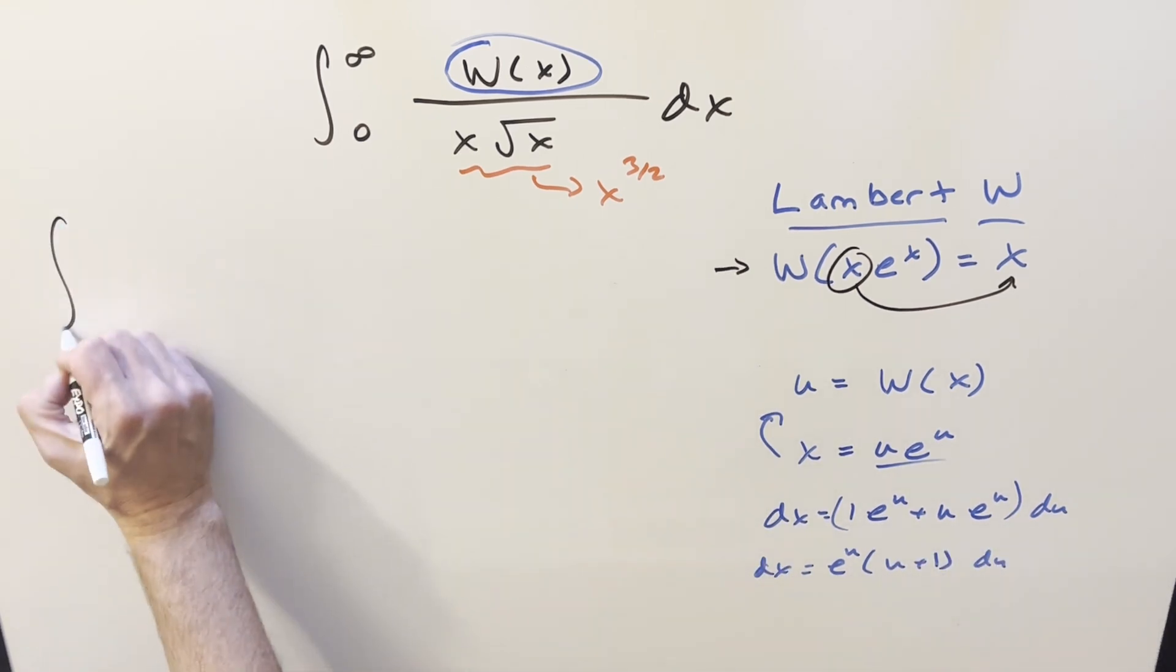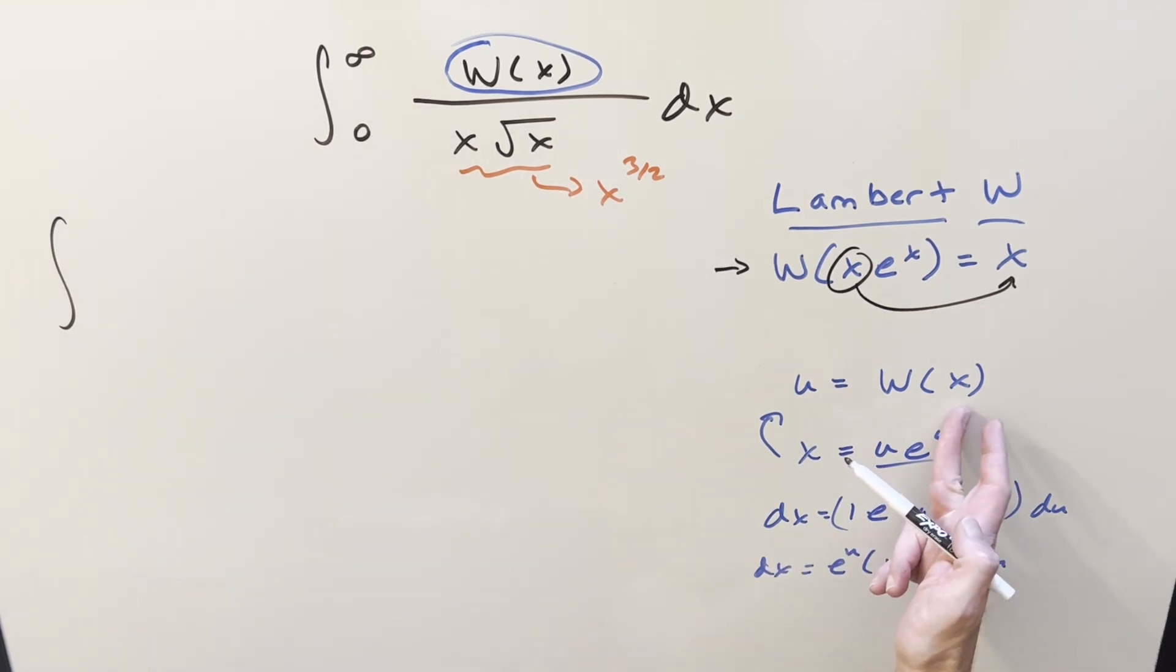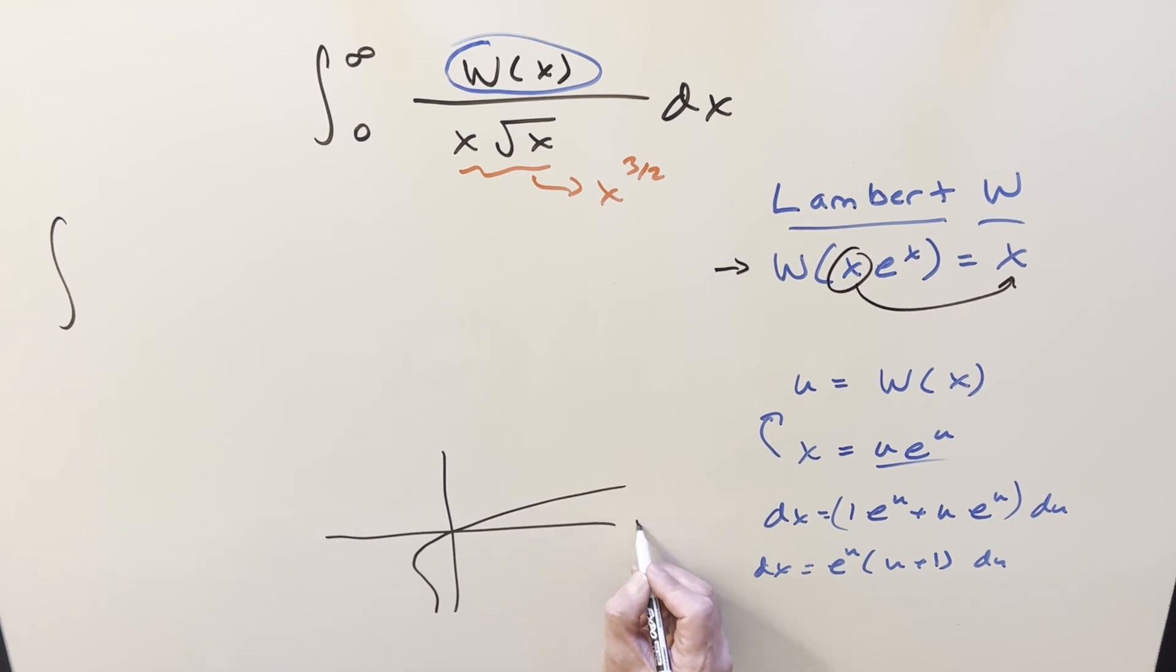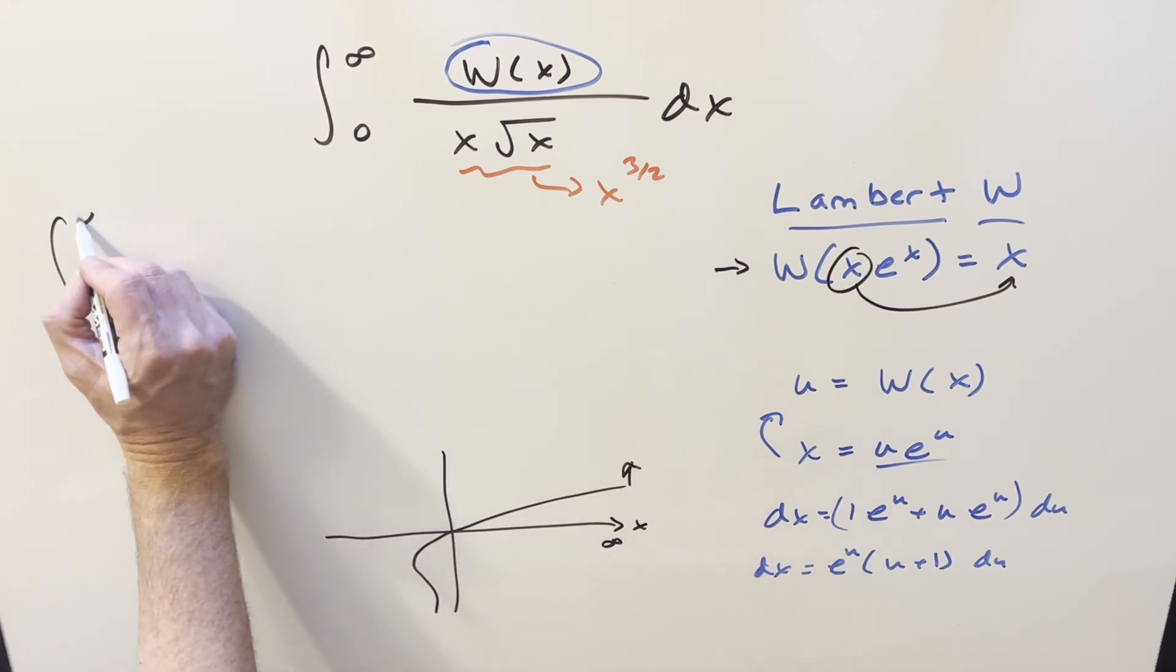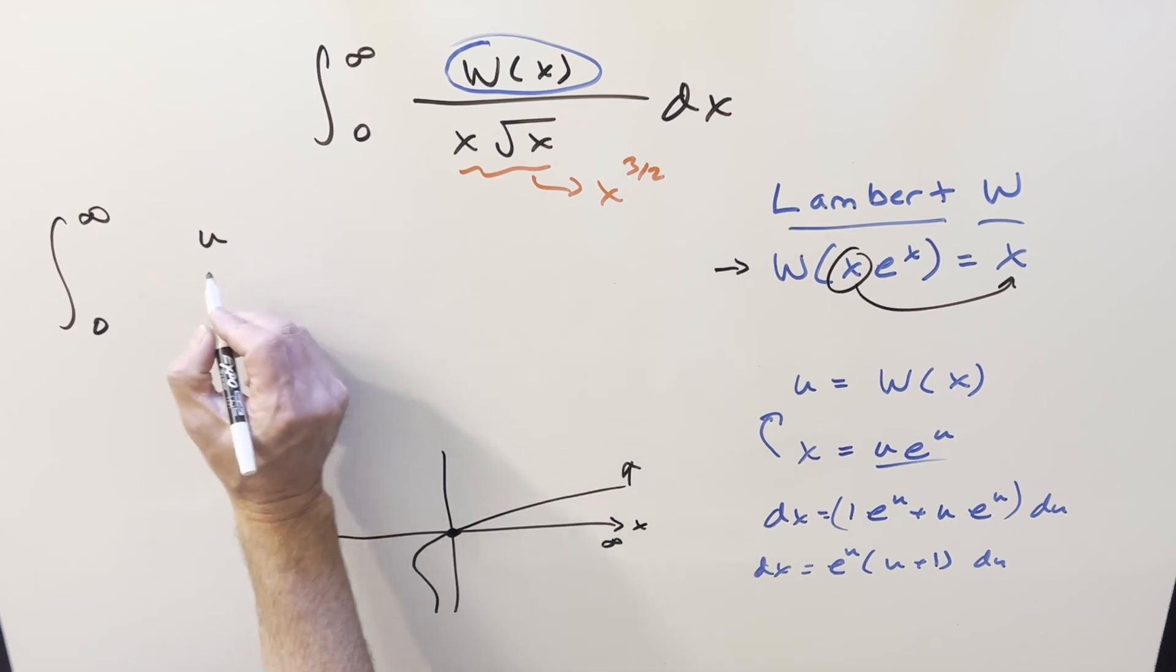Now we'll come over here and we'll just go ahead and substitute. First, plugging in infinity into the Lambert W function. Just a very rough graph of the Lambert function, it's something like this. So as the x value, as this is going to infinity, this is very slowly also going to infinity. So our upper bound is going to infinity. You plug a 0 in here, Lambert W at 0, that's this point here, that's also going to be a 0.